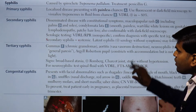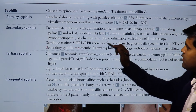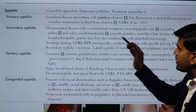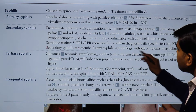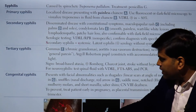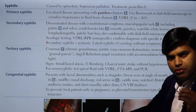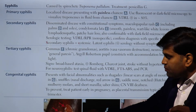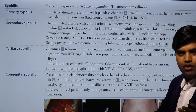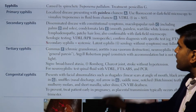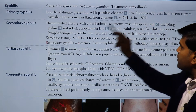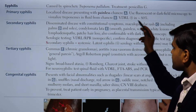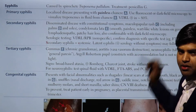Syphilis is caused by the spirochete Treponema pallidum; treatment is penicillin G. Primary syphilis is a localized disease presenting with the painless chancre — a painless ulcer in the genitalia. Use fluorescence or dark field microscopy to visualize Treponema in the fluid from the chancre. VDRL, the non-specific test, will be positive in 80% of cases.